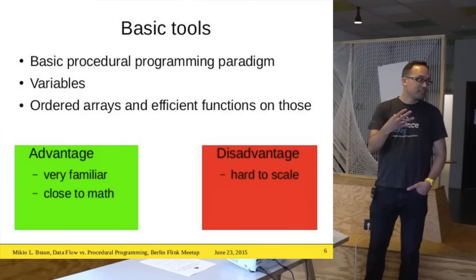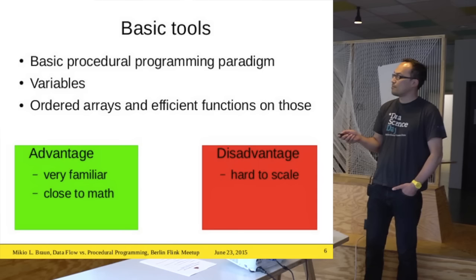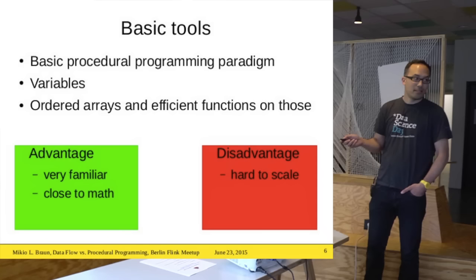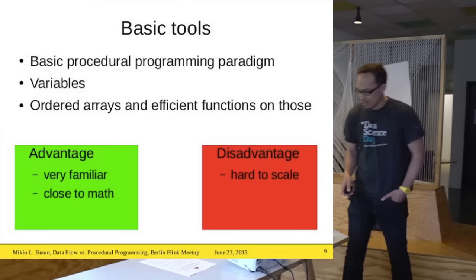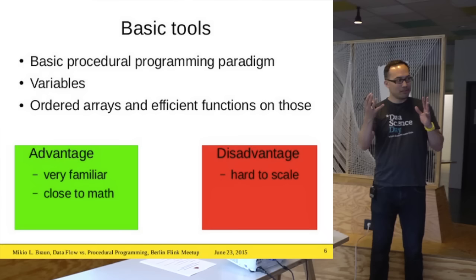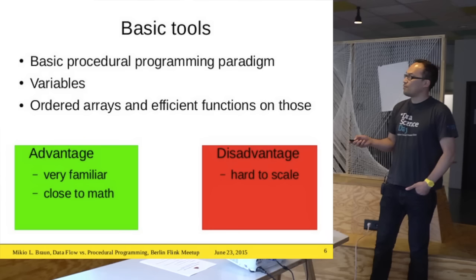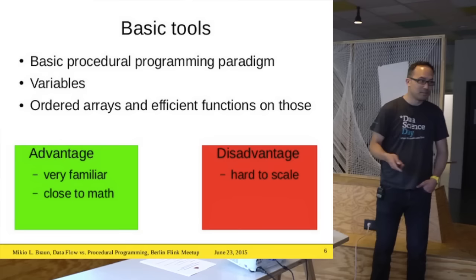This is what I call the basic procedural programming paradigm — like C, Pascal, or MATLAB. You have variables, ordered arrays, and functions to work on those. The advantage is it's very familiar and looks much like the mathematics you're trying to implement. The disadvantage is that it's hard to scale. It's somewhat easy to make it fast on a single machine with matrix optimizations, but going from this to something that can automatically scale to large amounts of data is hard.